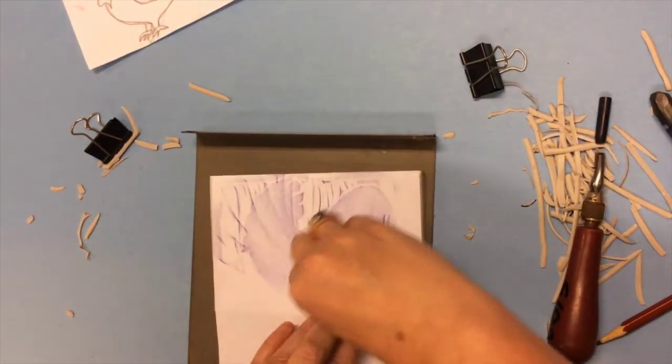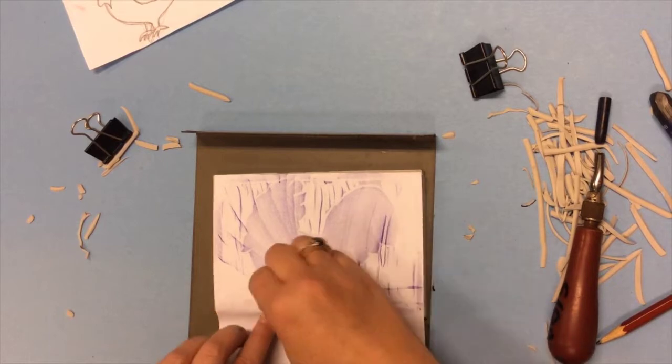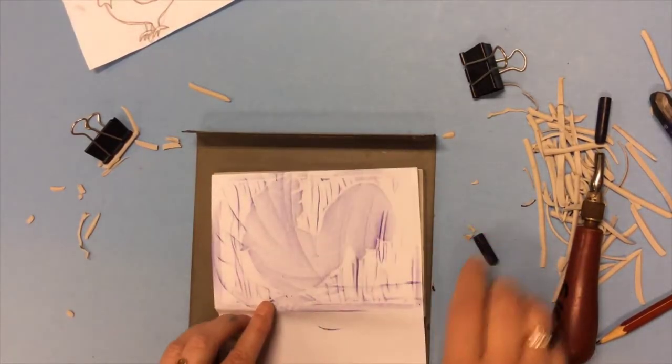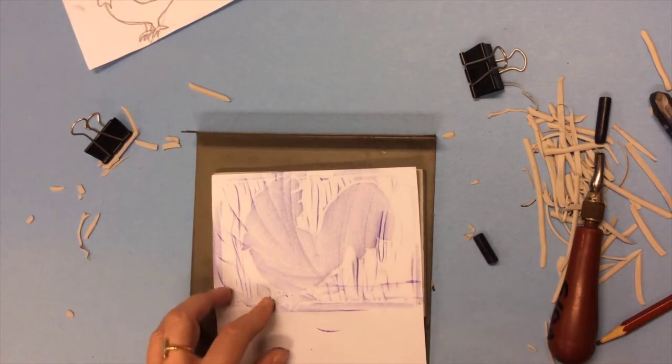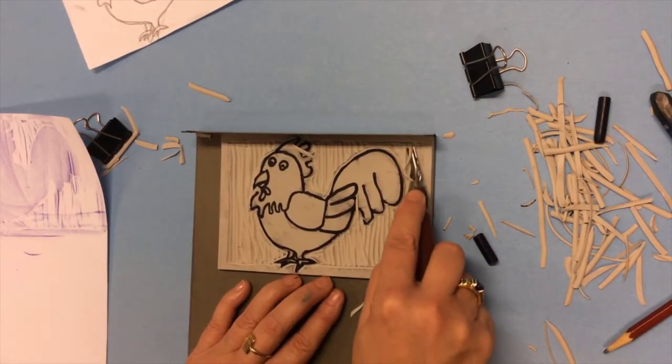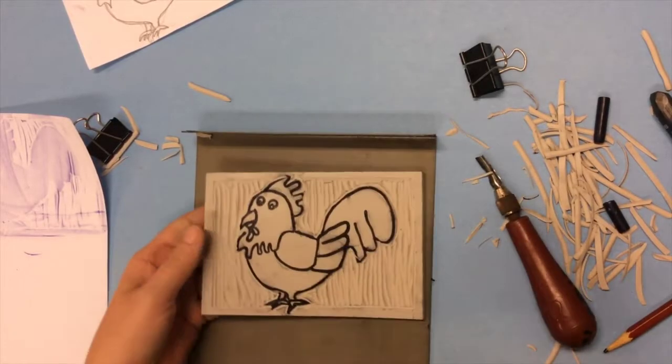Right now it lets me see that there's all kinds of lines in the background that I don't want in my project. So that means I'm going to have to go back and carve away some of those lines again. Okay so I just carve away those lines that were showing up in the crayon rubbing and I think that'll do it.